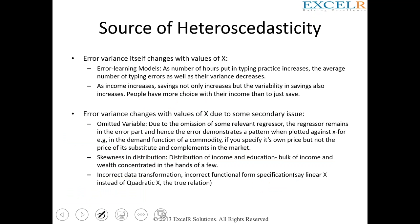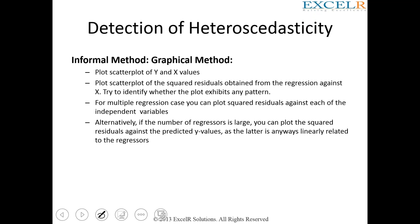To recap: heteroscedasticity means unequal variance. The assumption for linear regression is that your errors should have equal variance. If you have unequal variance, the coefficient values you get may lack precision. There are various graphical techniques to identify heteroscedasticity. You can use a scatter plot of your standardized residuals against fitted values.